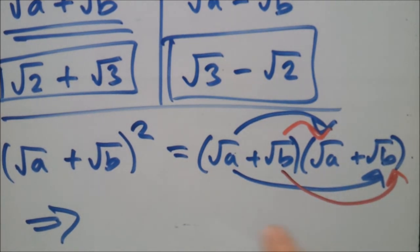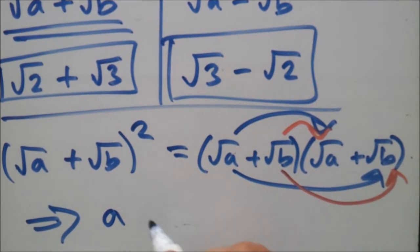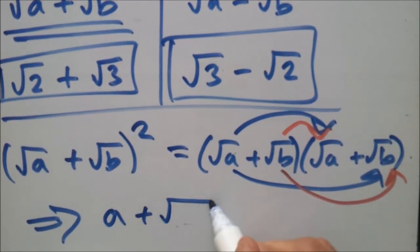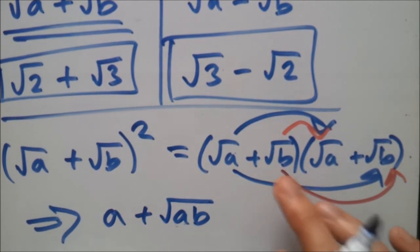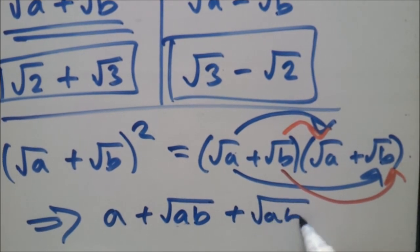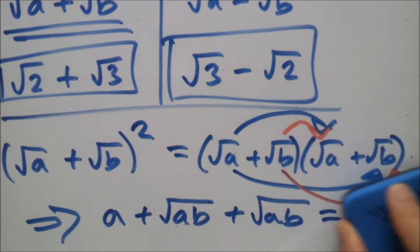From the last video, root a times root a was simply just a, so write that down. Now in this case, root a times root b is root ab. Okay. Root b times root a, once again root ab - you can do root ba but it's the same thing. It's best to keep in order of the alphabet. And finally, root b times root b is b.